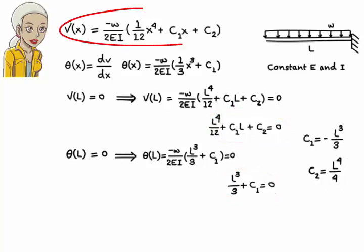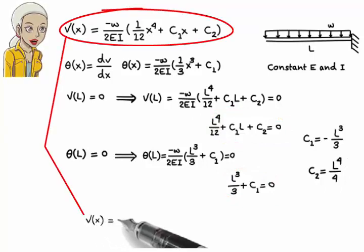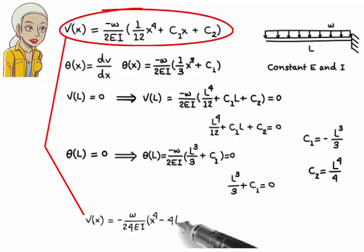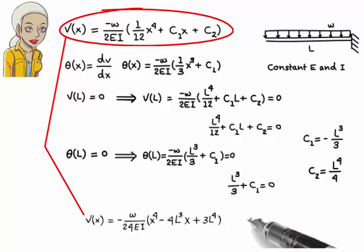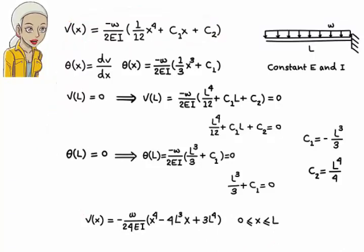Therefore, the deflection equation for the entire beam can be written as: v(x) equals negative w over 24EI times x to the power of 4 minus 4L cubed x plus 3L to the power of 4. This equation is valid for x between 0 and L.